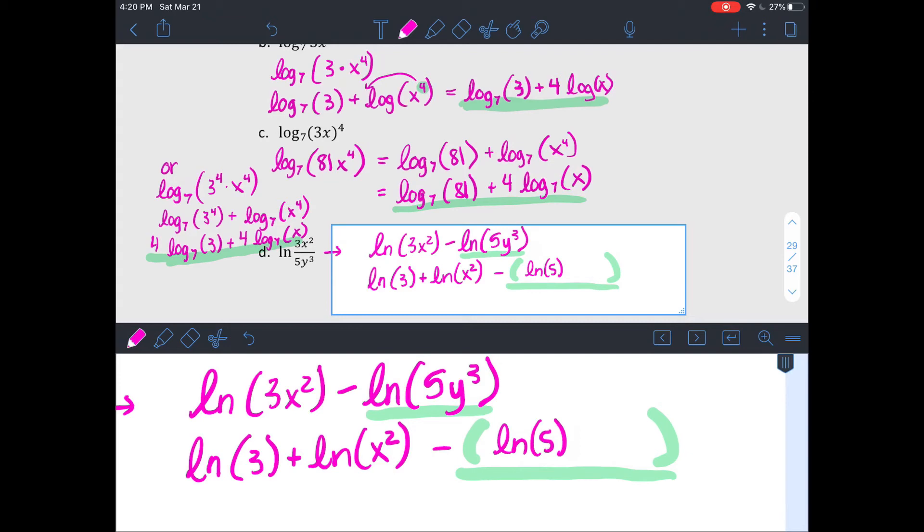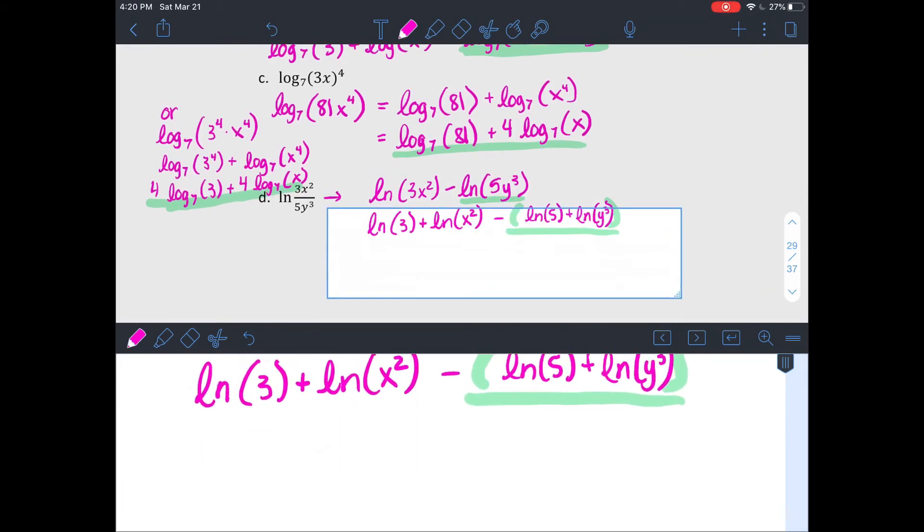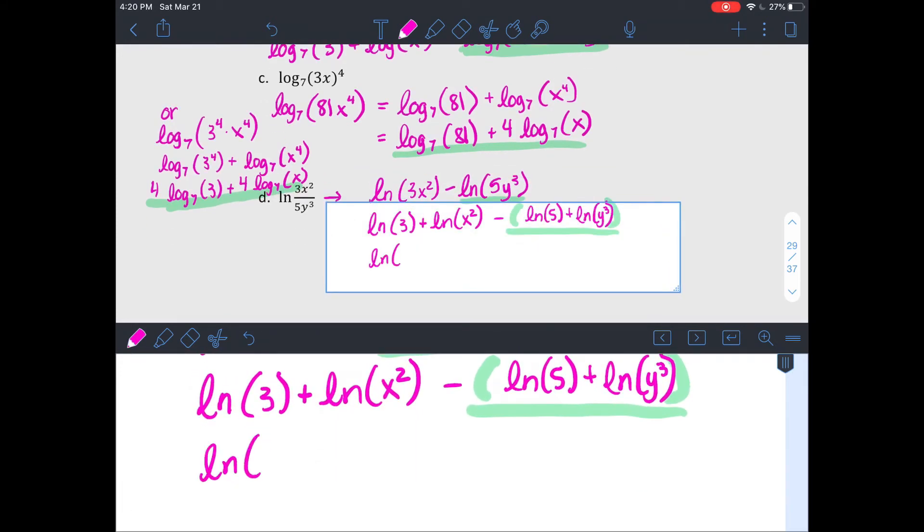So I'm going to have that right there. And then exponents, go ahead and bring them out. 2 times natural log of x minus, and then again make those parentheses around there. Natural log of 5 plus 3 natural log of y.